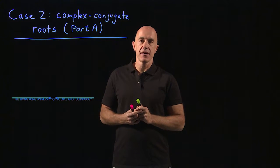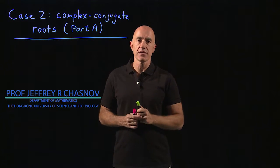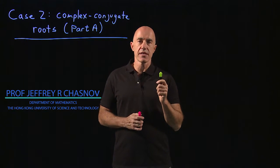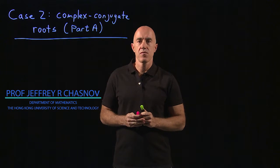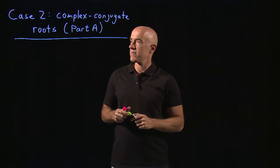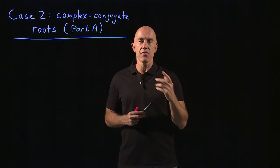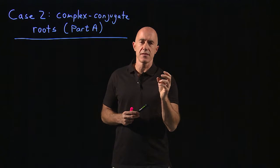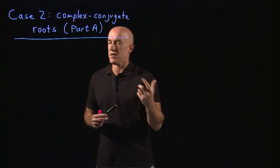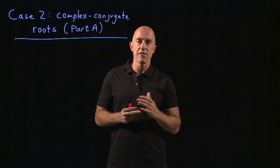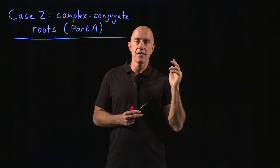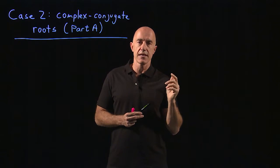We're solving the second-order homogeneous constant coefficient equation. We're considering the second case when the roots of the characteristic polynomial are complex. We need to figure out what to do with these complex exponential functions, so let's work through the theoretical idea first in this video, and then in the next video I'll work an example.